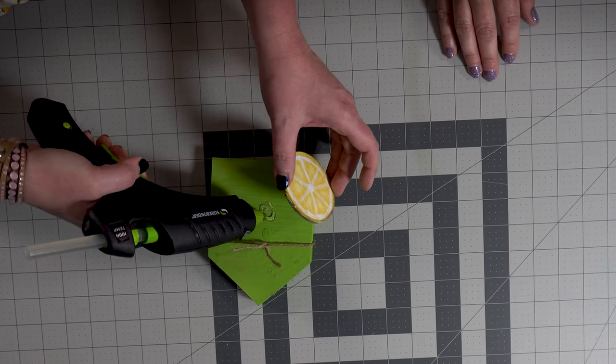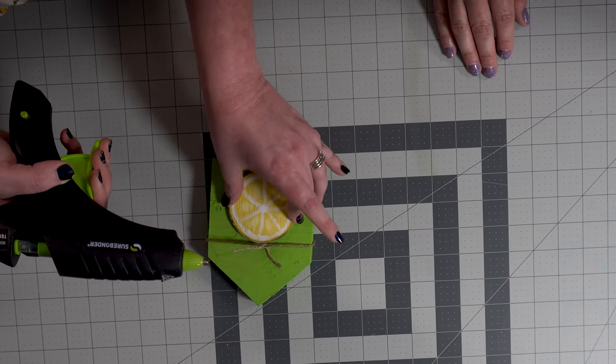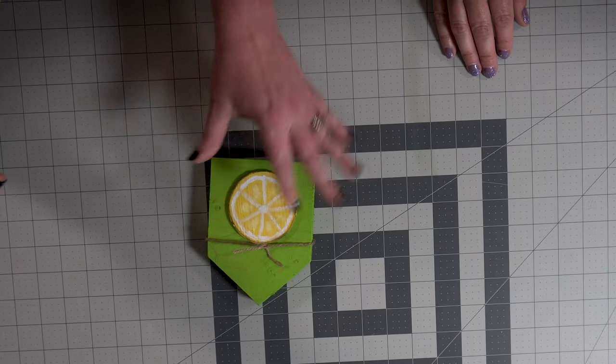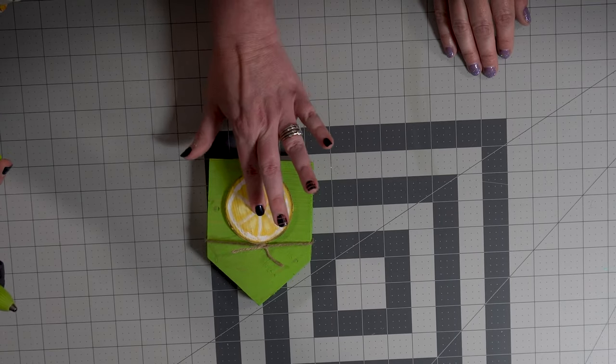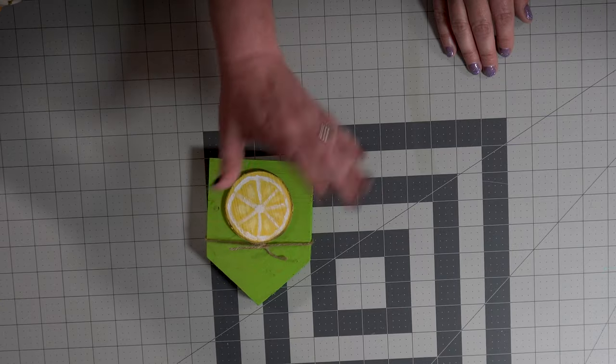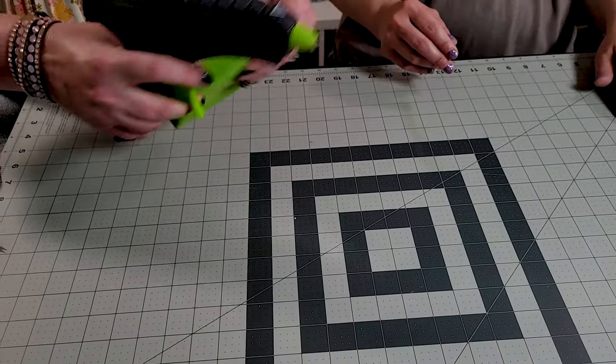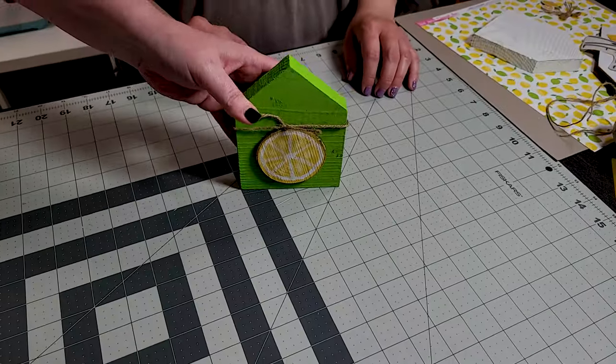But if you don't like it, the great thing about glue? Yep. Rip it off. Just take it back off. I do want to make sure it's kind of centered on my house, so if I'm going to put it in the middle. All right. So there's one of our little houses right there. Super simple.